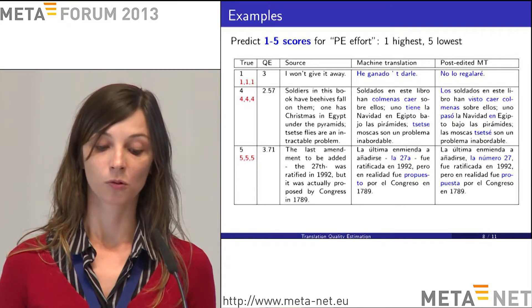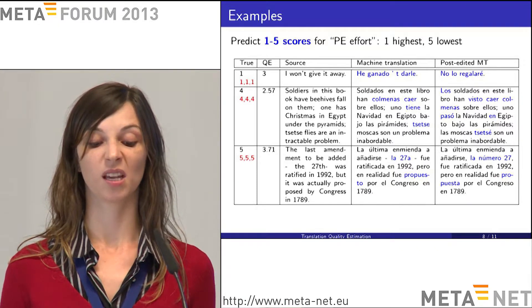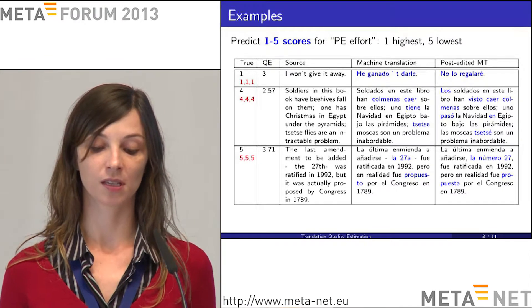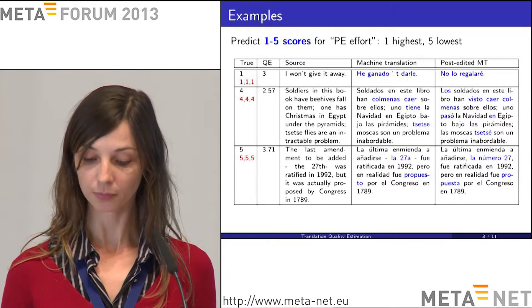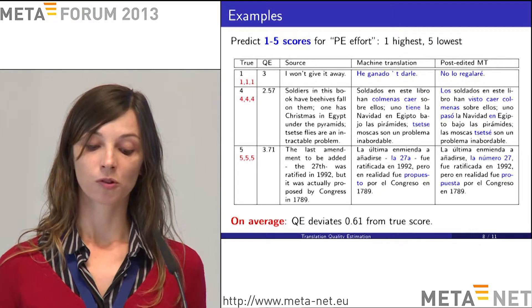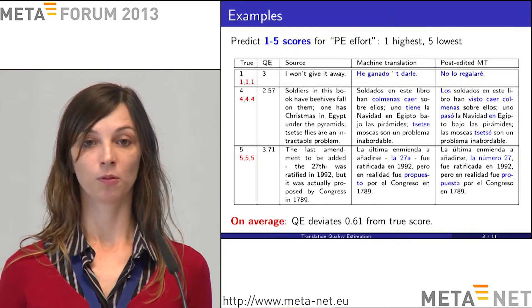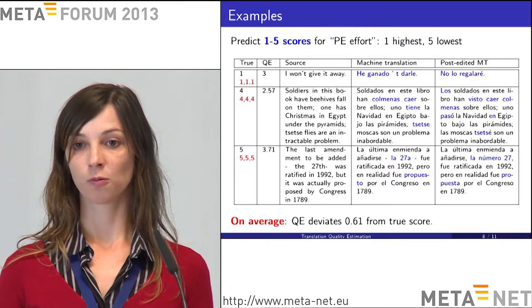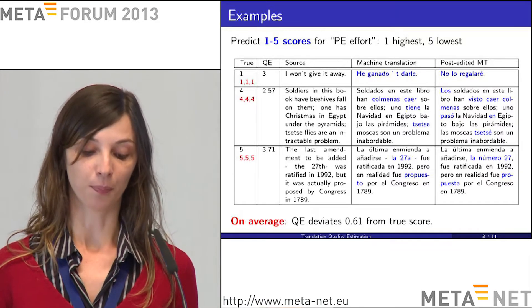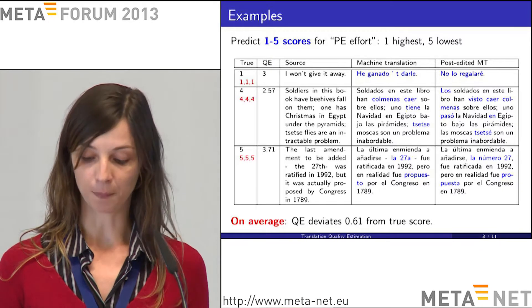There are of course cases where the system goes wrong. In the first example shown, all humans said it was a terrible translation, but the system guessed a 3 — a so-so translation. This is a difficult case because it's a very short sentence, making it hard to extract relevant information. But on average, the overall score shows that the system deviates from what a human would say by 0.61 on a one-to-five scale, where the maximum possible deviation would be four. So the deviation is an acceptable amount.